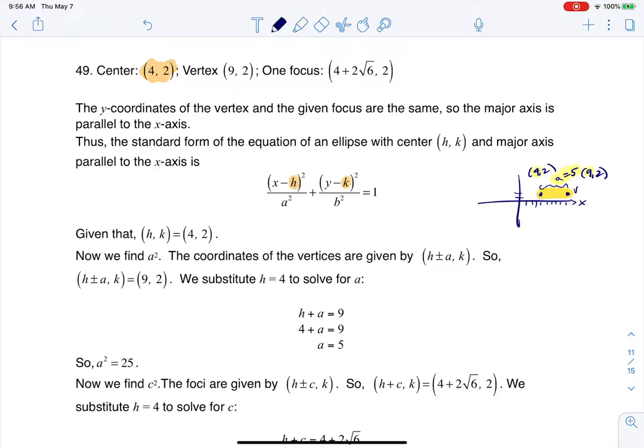So I'm actually going to have now a 5 under here for my A value. And that just leaves me with finding B. If I can find B, then I'm good to go.